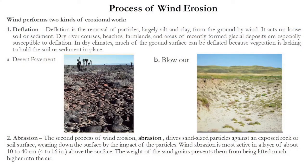Firstly we'll know about the process of wind erosion. Wind performs two kinds of erosional work basically. First is deflation, and then there is abrasion. There is another kind which is known as attrition — we'll deal with it later. But firstly we'll start with deflation.